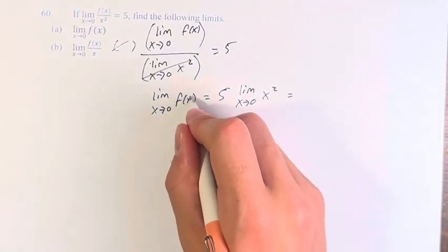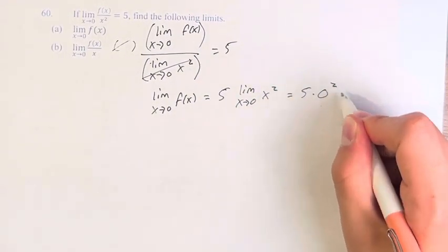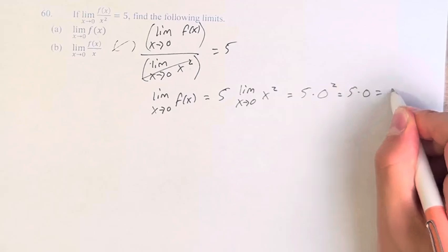Therefore, the limit as x approaches zero of f(x) is equal to 5 times, and now we can just plug in zero, zero squared, 5 times zero, which is just zero.